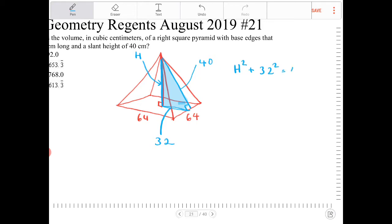I want to isolate H. H² = 40² - 32². Take the square root of both sides, I get this.